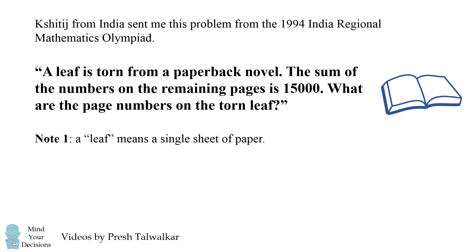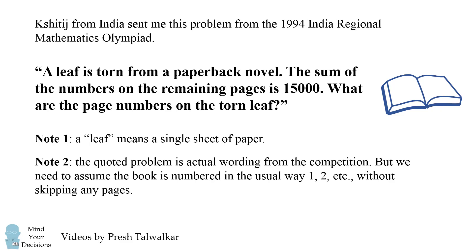Now there are a couple of notes I want to add about this problem. First, a leaf means a single sheet of paper. Second, the quoted problem is the actual wording from the competition, but we need to assume the book is numbered in the usual way, starting on page 1 without skipping any pages. In the original video I posted, I also overthought the problem and put in some assumptions that were not in the original wording. Thankfully many of you pointed out comments that helped me correct the video, and so I can now present the correct answer. Can you figure it out?